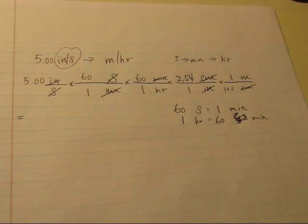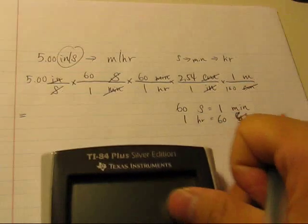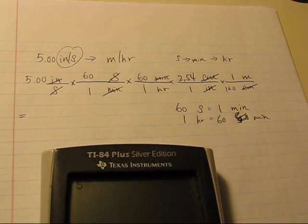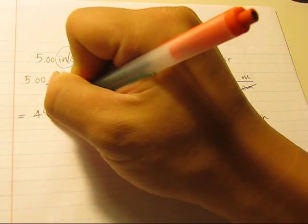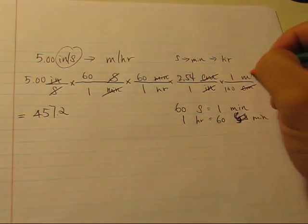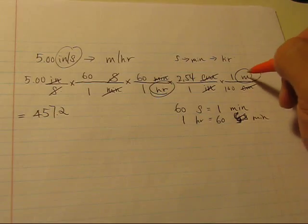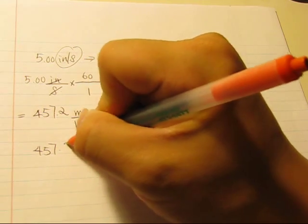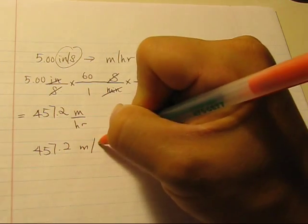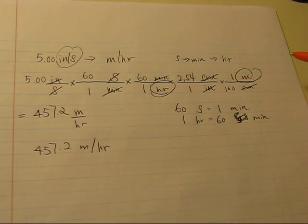So what you do next is to carry out the calculations. So 5 times 60 times 60 times 2.54 divided by 100. 457.2. What's the unit? Well, see what's left. Meter over hour. Or you can write 457.2 meters per hour. So this is your answer.